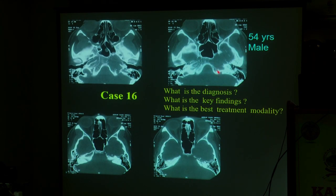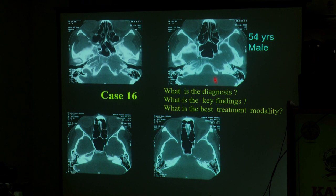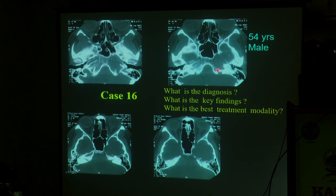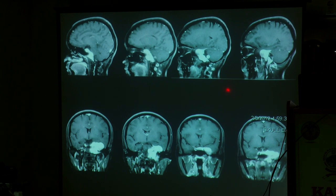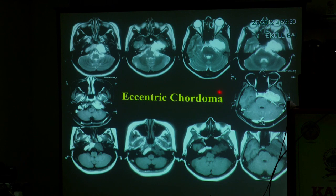Case number sixteen: a 54-year-old male. What is the diagnosis? Large lytic lesion with irregular margins in the skull base, in the petrous bone — it is an eccentric carcinoma.